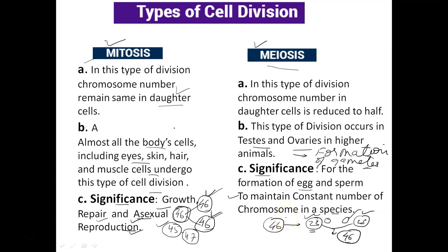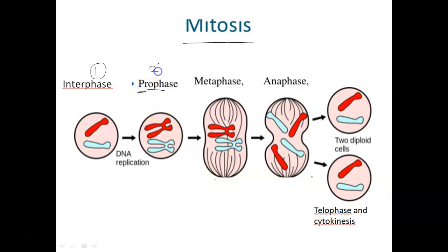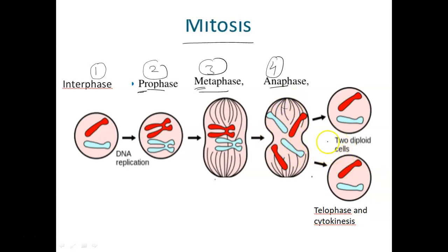Here is an overview of the processes occurring in mitosis. The first phase is interphase — the phase between two successive mitotic divisions. Then prophase, where 'pro' means first. Then metaphase, where 'meta' means in the middle. Then anaphase. And finally telophase, when chromosomes reach the opposite poles and the cell divides, giving rise to two daughter cells, followed by cytokinesis.